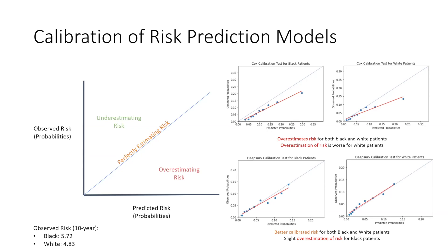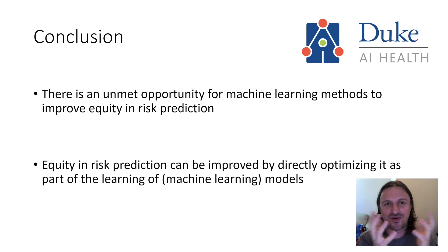If we take the more sophisticated model proposed around 2016, called DeepSurv, comparing the plots from the top and the bottom, the model is better calibrated. It doesn't have a C-index significantly better than the well-established statistical model, but in terms of calibration — both visually and quantitatively — the differences are very large. We also see smaller differences between the risk estimates for Black and White individuals, meaning these risk estimates provide more equitable access to preventive strategies.